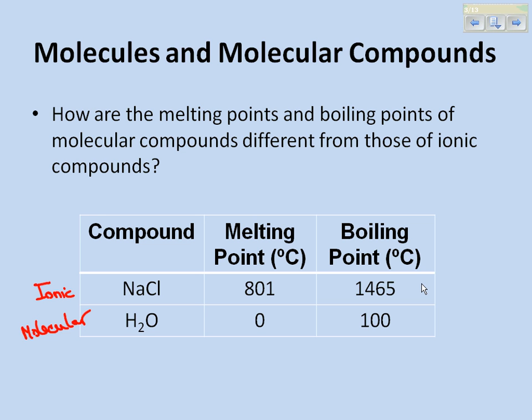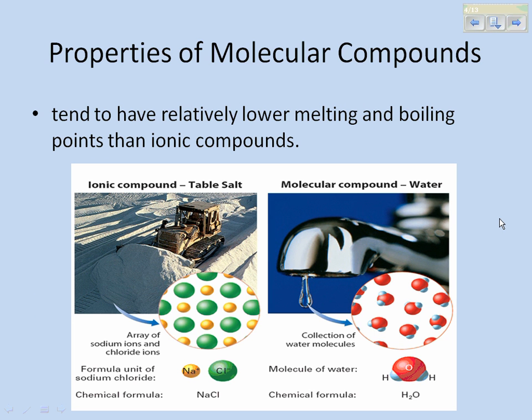Its boiling point is even higher. Boiling point is when a liquid changes to a gas. Notice water is at 100 degrees Celsius — easy to obtain in our homes and in our lab. Some properties of molecular compounds: they tend to have relatively low melting and boiling points, lower than your ionic compounds.